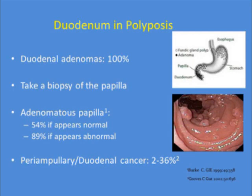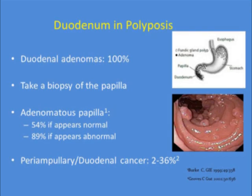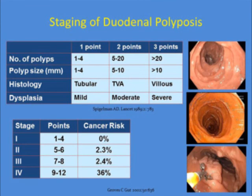The duodenum is where the focus should be for gastroenterologists managing post-colectomy FAP patients. Duodenal adenomas are near-universal and often periampullary. If you have a patient with numerous colon polyps and suspect a genetic syndrome, do an EGD and biopsy the papilla. In our study, 50% of the time biopsying a normal-appearing papilla in adenomatous polyposis syndromes will yield an adenoma; nearly 90% of the time if it looks abnormal. Periampullary and duodenal cancer risk ranges from 2% to 36%, based on stage of duodenal polyposis.